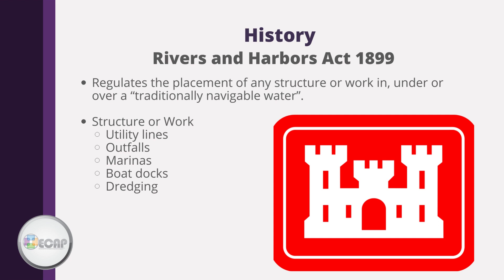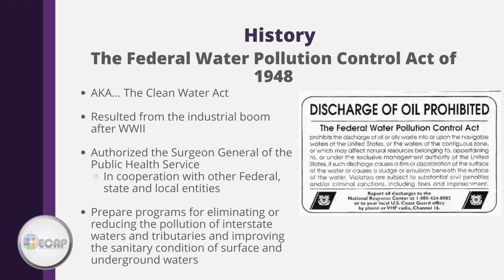Some examples of a structure or work include utility lines, outfalls, marinas, boat docks, dredging, wharfs, and piers. The Federal Water Pollution Control Act of 1948, better known as the Clean Water Act, resulted from the industrial boom after World War II. Originally, this act authorized the Surgeon General of the Public Health Service — so it was a public health issue, not environmental.